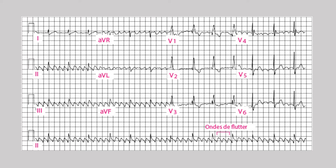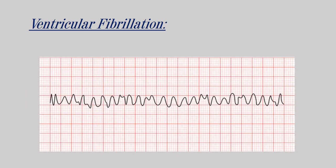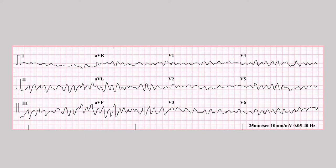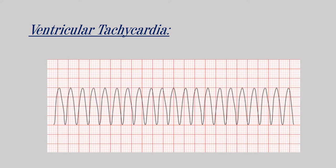Ventricular fibrillation occurs when the ventricles receive disorganized signals, causing them to twitch uselessly and aimlessly with no proper contraction of the ventricular muscle. As a result, no blood can be pumped to any of the organs — this case is an emergency. There are no P waves and no QRS complexes visible.